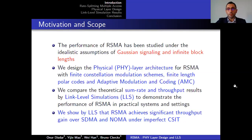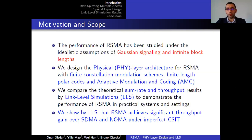The performance of RSMA has been studied under the idealistic assumptions of Gaussian signaling and infinite block lengths. In this work, we design a physical layer architecture for RSMA with finite constellation modulation schemes, finite length polar codes, and an adaptive modulation and coding algorithm. We compare sum rate and throughput results by link level simulations to demonstrate the performance of RSMA in practical settings, and we show that RSMA achieves significant throughput gain over SDMA and NOMA under imperfect CSIT.